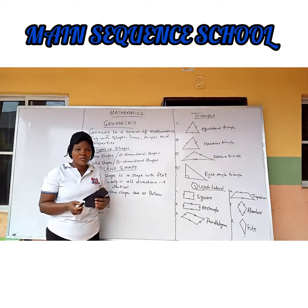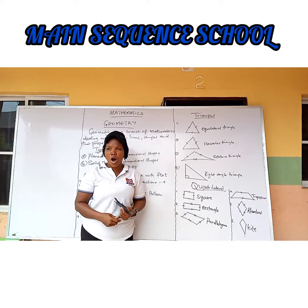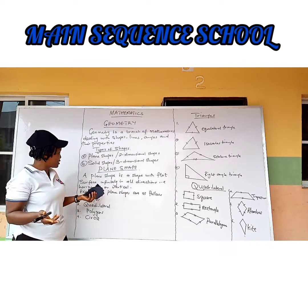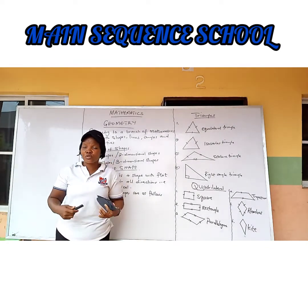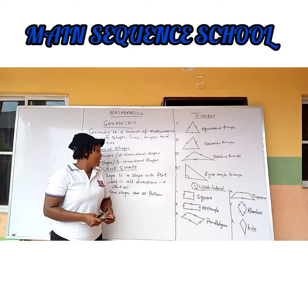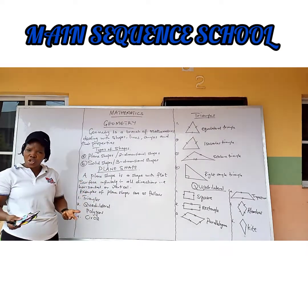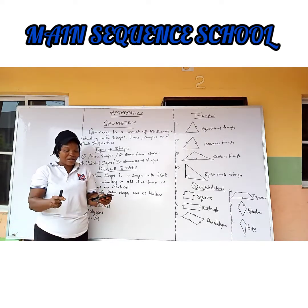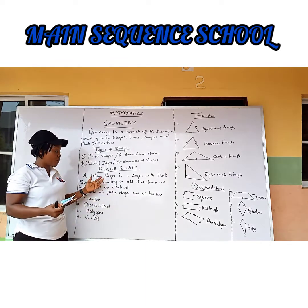Types of shapes: firstly, we have plane shapes, also called two-dimensional shapes. Secondly, we have solid shapes, also called three-dimensional shapes. A plane shape is a shape with a flat surface — any shape that has a flat surface is referred to as a plane shape.